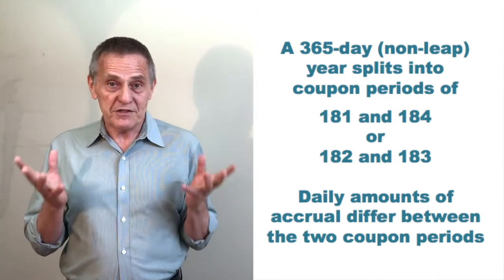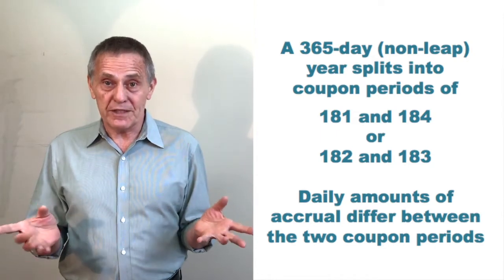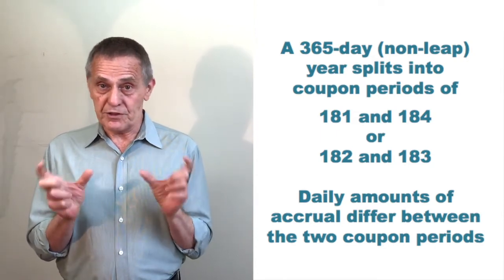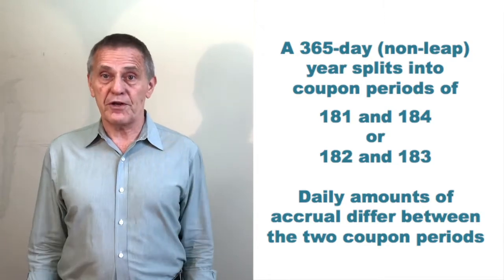Because again, each coupon is for exactly one half of a year's interest, even though the lengths of the two coupon periods are just a little bit longer or a little bit shorter than a half year.